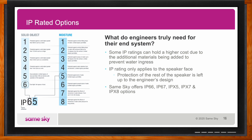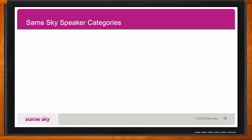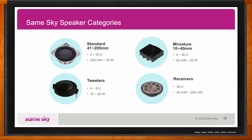At SameSky, we categorize our speakers into four categories. We have standard speaker options — speakers over 40 millimeters in length or width. We also offer a wide selection of miniature speakers ranging from about 10 to 40 millimeters in size. We have tweeters that are excellent at performing at higher frequencies, and we also have receivers, which are commonly seen in headphones or headsets and are meant to be used when pressed against the ear.